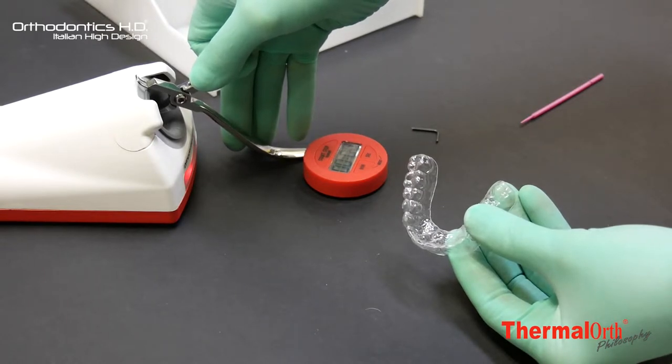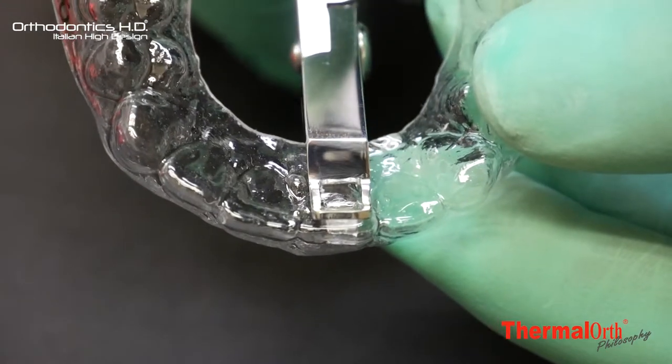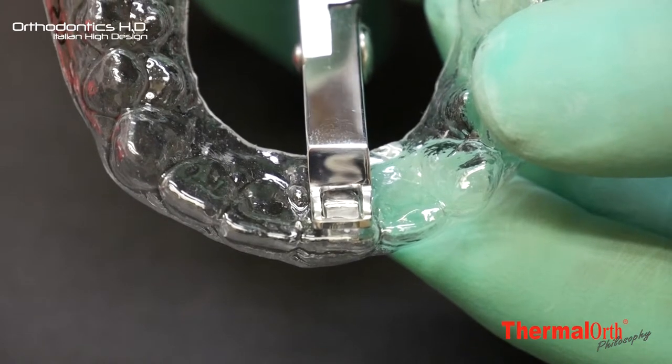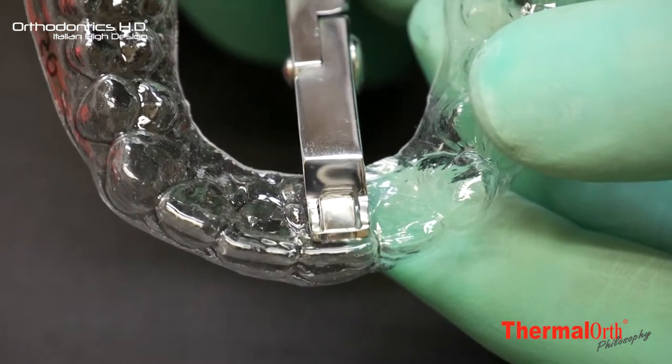Once the working area of the aligner is detected, heat the plier according to the thermoforming timetable in relation to the thickness of the plastic used and gently tighten the plier until the end of the stroke.